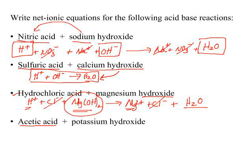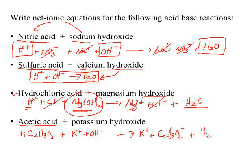Here we have acetic acid, which is a weak acid, so we write the formula non-ionized: HC2H3O2. We would ionize the potassium hydroxide, which is a soluble strong base. Your product is potassium acetate, which is a soluble compound based on your solubility rules, and water. The difference is that your acetic acid will not cancel with your acetate ion. Your only spectator ion is the potassium ion, leaving you on the left with the weak acid and the ionized hydroxide ion, and on the right the acetate ion and water.